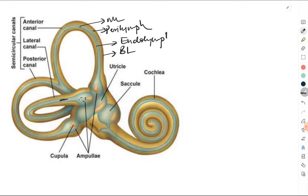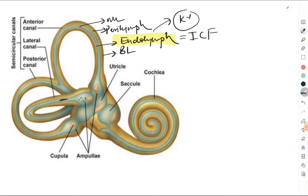The contents of the endolymph are similar to the contents of the intracellular fluid, meaning the endolymph is rich in potassium. This point is very important in order to understand how the vestibular apparatus is going to function.